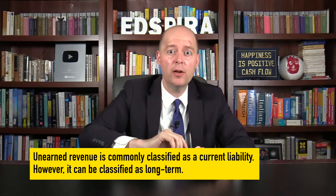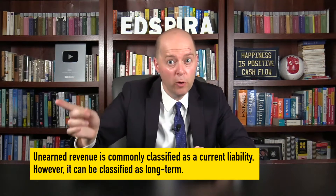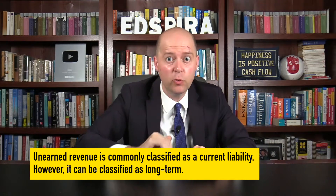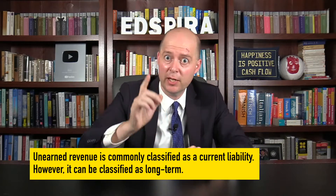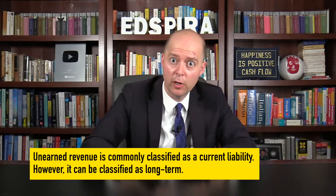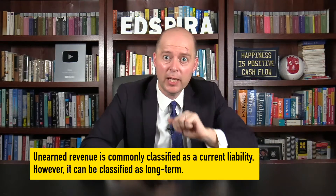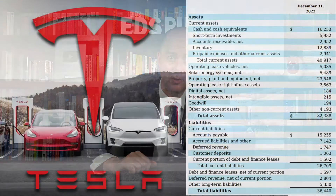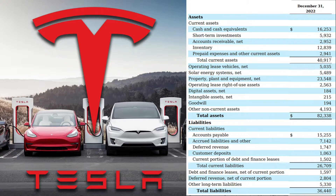However, if the company doesn't believe that unearned revenue will be earned within the next 12 months or the length of the operating cycle, whichever is longer, it can be classified as a long-term liability. For example, take a look at Tesla's balance sheet as of December 31, 2022. Tesla has recognized some of its unearned revenue as a current liability and the rest as a long-term liability.